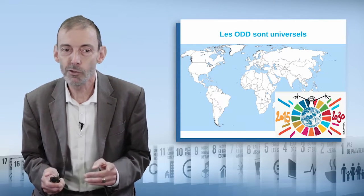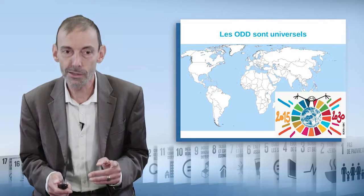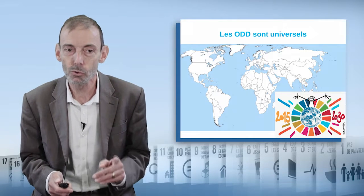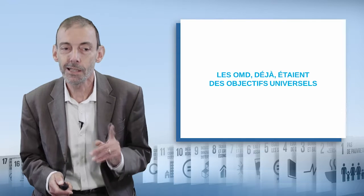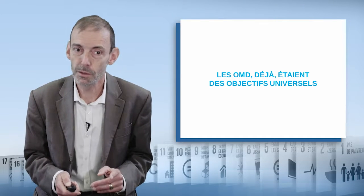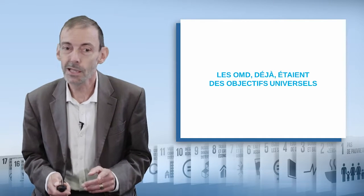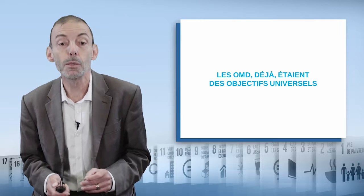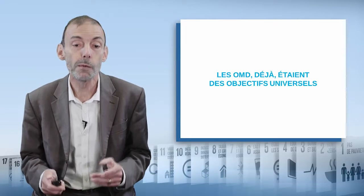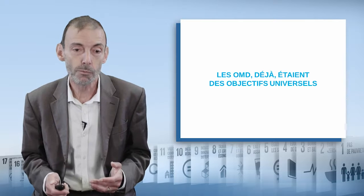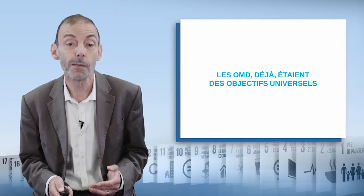Unlike the previous goals — the Millennium Development Goals, adopted in the year 2000 — that's not quite right, because the MDGs were already universal objectives for every country, but they were perceived by public opinion as being objectives for developing countries. And in fact, there even seemed to be a concern for international aid.